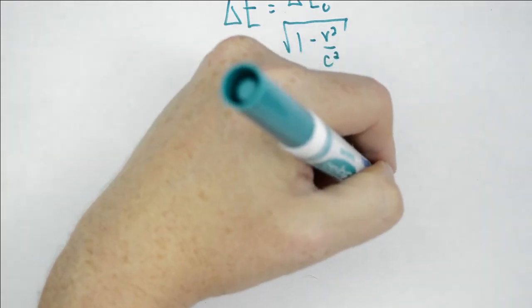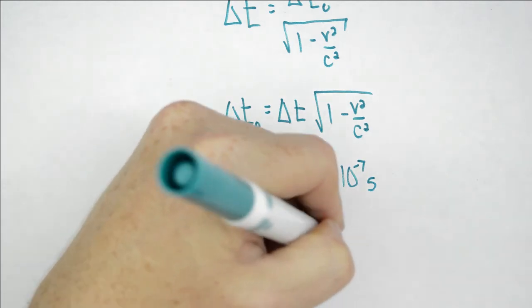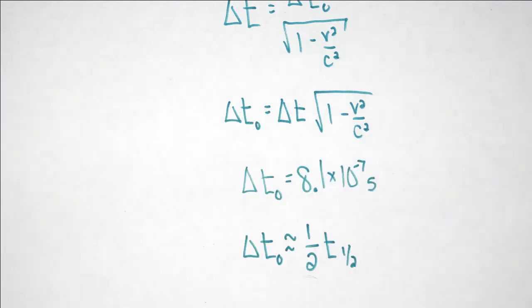As we go through this calculation, we see that according to the muon, it only takes 8.1 times 10 to the negative 7 seconds to arrive on the surface of the Earth. That's only about half of a half-life.